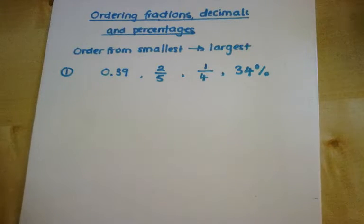In this video, I'm going to show you how to order fractions, decimals, and percentages. So for this question, we have 0.39, 2 fifths, 1 quarter, and 34%, and we're going to order them from smallest to largest.